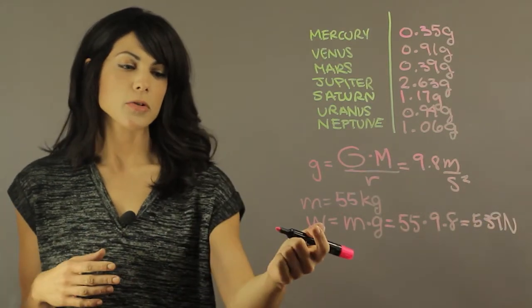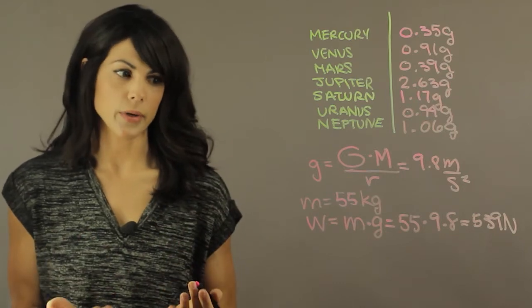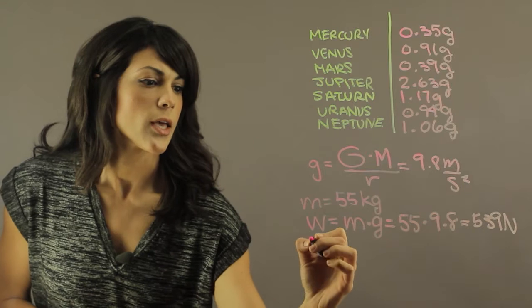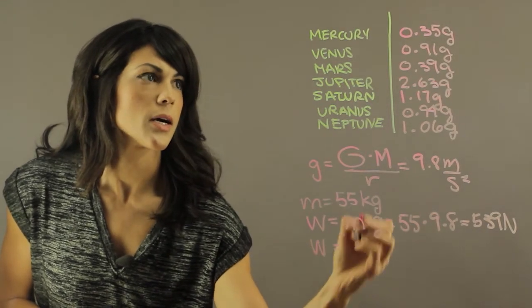Now let's see how much we would weigh on Mercury. Mercury is 0.35 g, so the weight would be